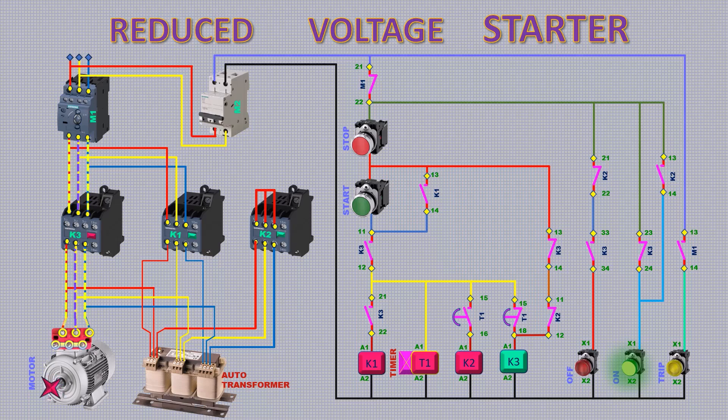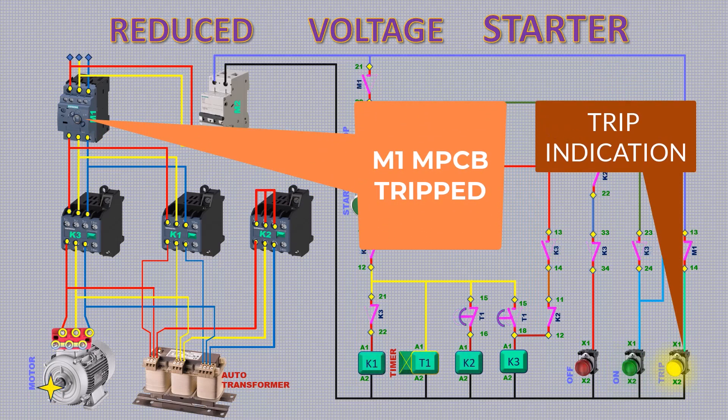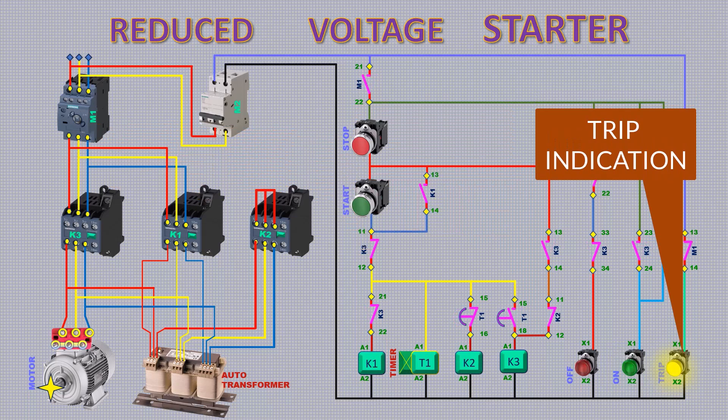In abnormal condition, MPCB will trip the circuit like this way to protect the motor. The yellow indicates fault condition.